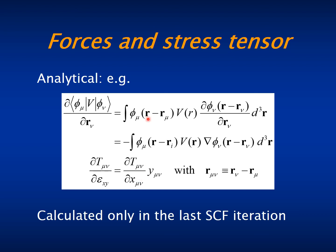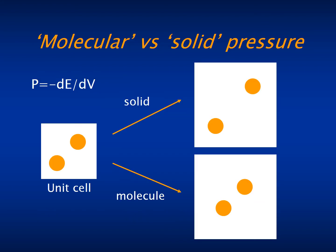Of course, all this can be done only in the last self-consistency iterations, that is when you have already converged the density. Also regarding the stress, or in particular the pressure — that is the derivative of the energy with respect to the volume — SIESTA prints two pressures which are called solid pressure and molecule pressure.